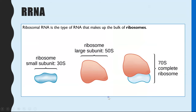The final type of RNA is ribosomal RNA, or rRNA. All you need to know is that rRNA combines with protein to make ribosomes — that is its function.